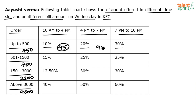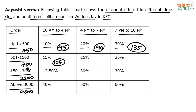20% of 450 is 90, and 30% of 450 is 135. You should be very quick in working with these numbers. For the 501–1500 range we used 700: 15% of 700 is 105 rupees, and 25% of 700 is 175 rupees.